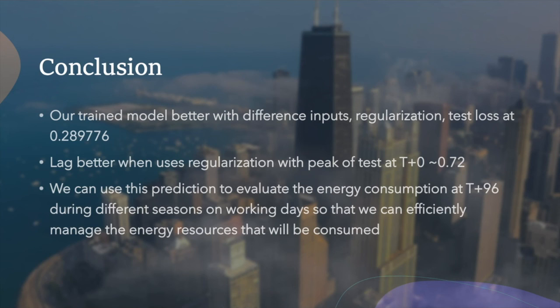In conclusion, our model best test loss was 0.2897 with difference as our additional advanced feature. We also noted that the lag was better with regularization, with the peak test loss at T0 equals to 0.72. We can predict the energy consumption at T96 during different seasons on working days so that we can efficiently manage the energy resources.